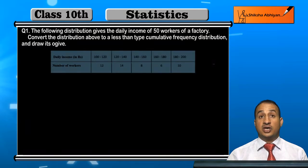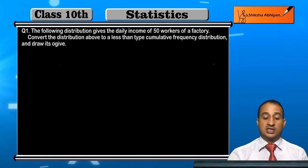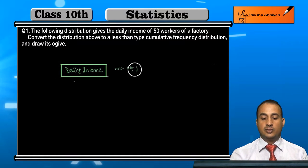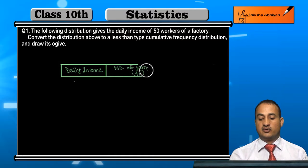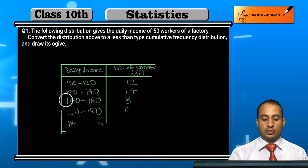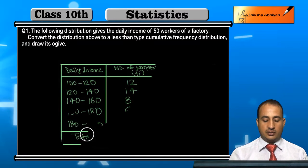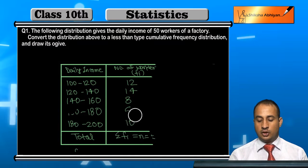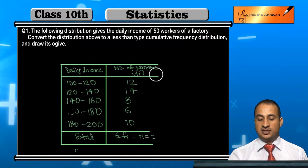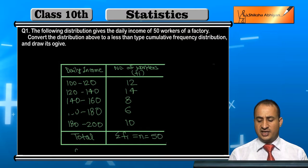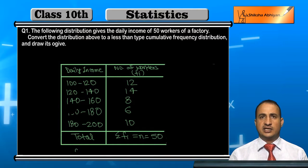First of all, I will write down the given data — the daily income and the number of workers, i.e., the frequencies. The total sigma FI is 50.